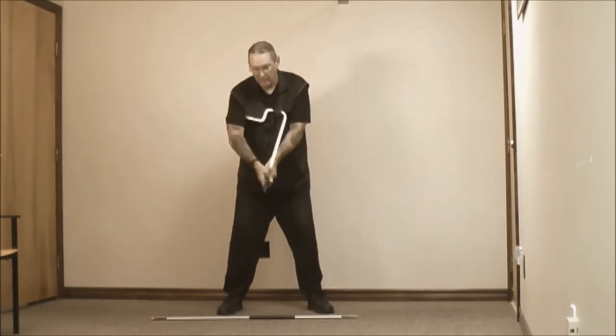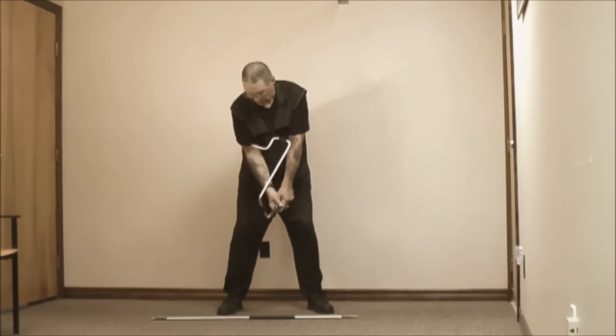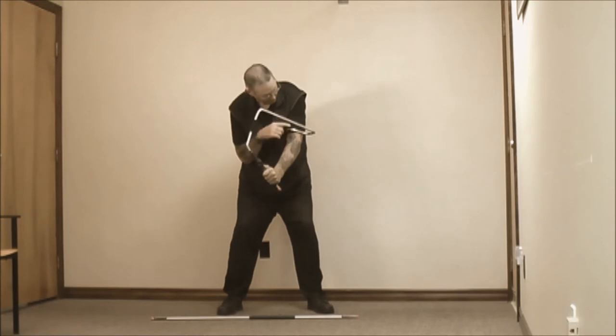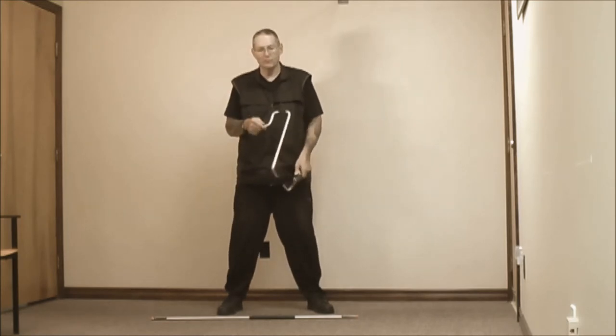So the first exercise to kind of get used to that is just set up here and cock your left wrist up and fold your right arm until it sets right on the left bicep. Do that a few times, you'll be able to hit it pretty easily.